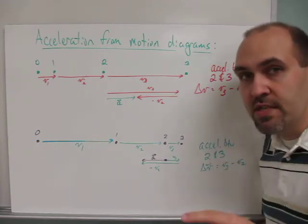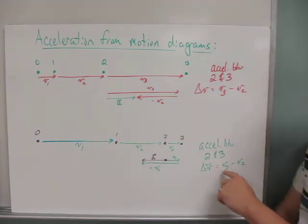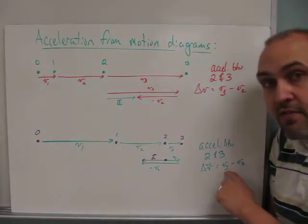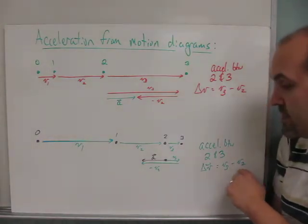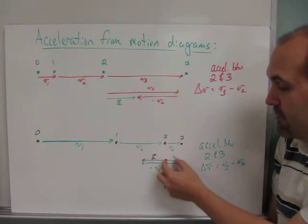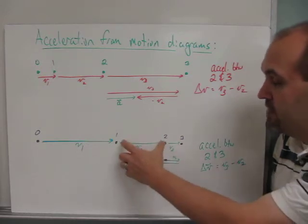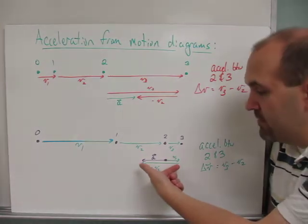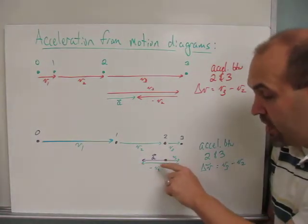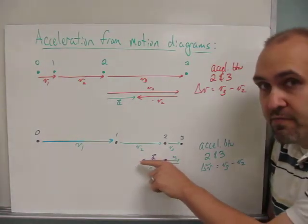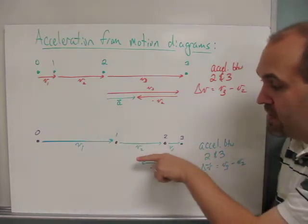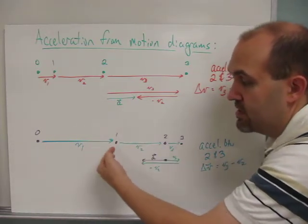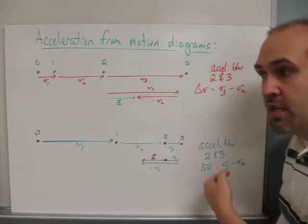If I asked what's the acceleration between 2 and 3, I would also subtract the final from the original, v3 minus v2. I write v3, I copied it down, and I copied v2 down, but I flipped it so that it went the other direction because we're adding the negative. And then we get an acceleration vector that points left. So the velocity is right, the acceleration is left, and in this case that means that object is getting slower, it's slowing down.